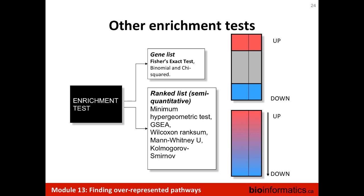There are other enrichment tests besides Fisher's exact test — binomial test, chi-square test — with certain differences in their statistical assumptions. For ranked list analysis, there are many different varieties of GSEA and related approaches, using statistical tests like Wilcoxon rank-sum, Kolmogorov-Smirnov, and so on. If you have your own previously not well-described data, you may want to design your own pathway analysis test. I would recommend using permutation tests to randomly sample genes from your lists and see how frequently pathways show up as a sanity check — before getting enthusiastic about your results, repeat the experiment with randomly sampled genes.